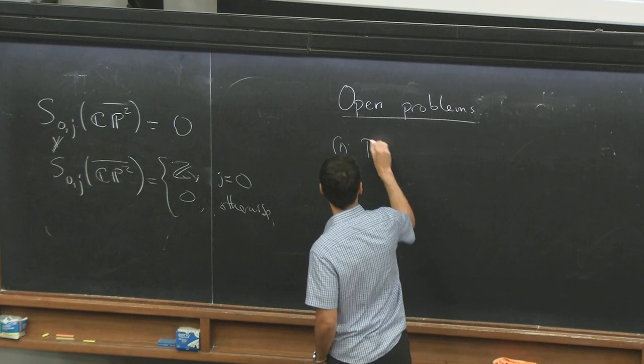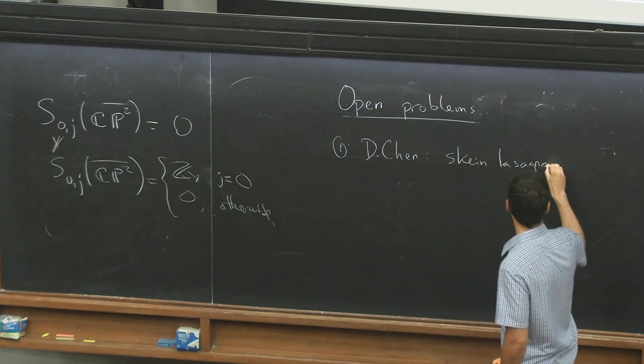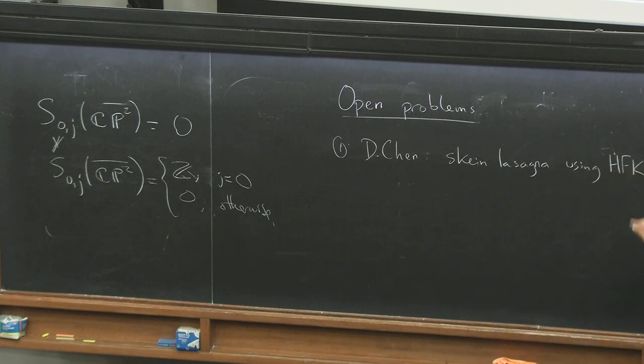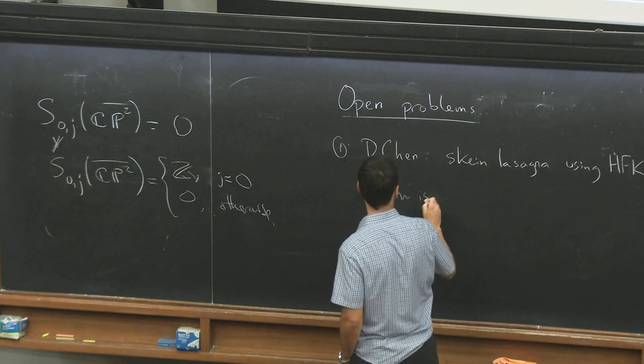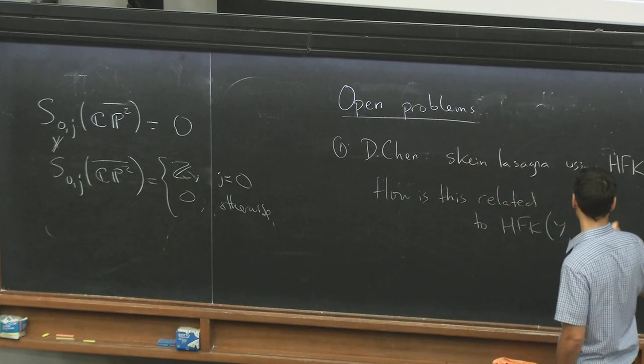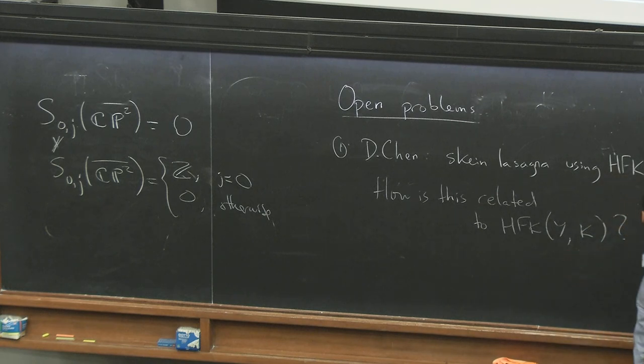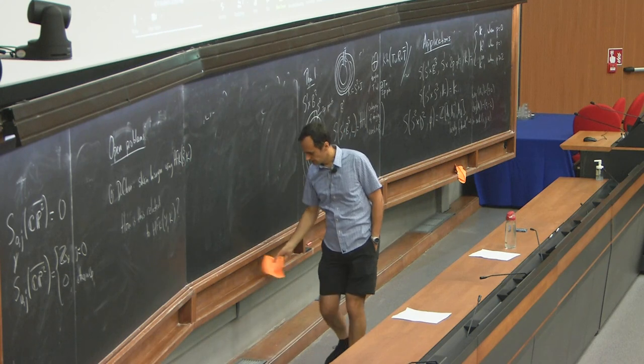So my student, Darren Chen, he defines skein lasagna using HFK. HFK has slightly different functoriality properties than Khovanov homology, but you can prove a similar two-handle addition theorem. But the challenge is, how is this related to the actual HFK? In, so for knot Floer homology, we have something in any three-manifold, and you can pretend we don't and just start with S3. Well, and in simple examples, they're the same, but I don't know if they're gonna be the same in general.